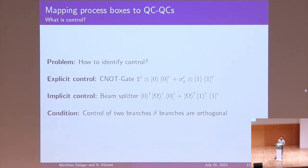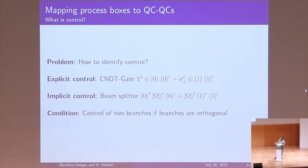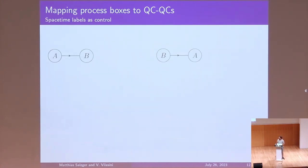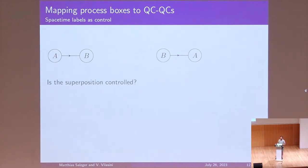Now if we look at an example of a process box — a very simple process with just Alice and Bob, considering two causal orders: Bob then Alice, or Alice then Bob — we can ask: is a superposition of these two processes controlled? In the process box framework, we add timestamps: T equals one for one ordering and T equals two for the other. The question is whether this tells us anything about orthogonality.